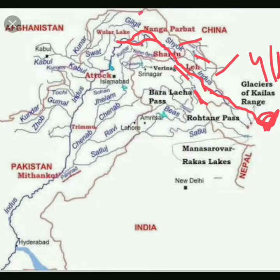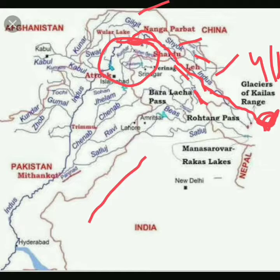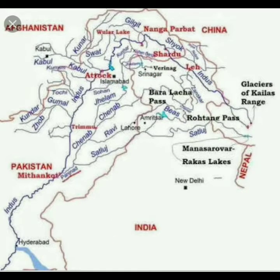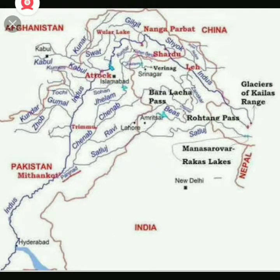After entering Pakistan, the Indus receives several Himalayan tributaries: Shyok, Gilgit, Zaskar, Hunza, and Nubra. These are all marked here on the map.